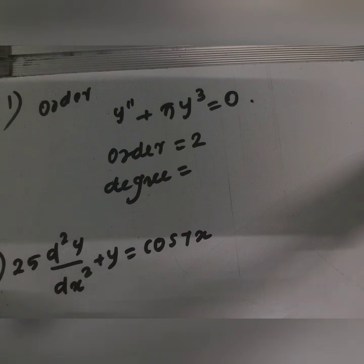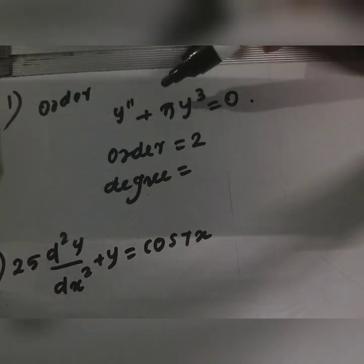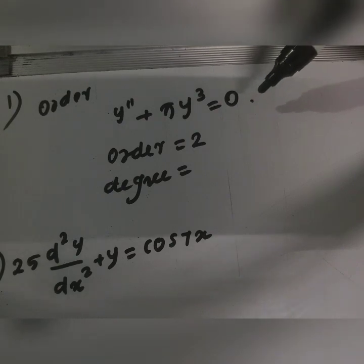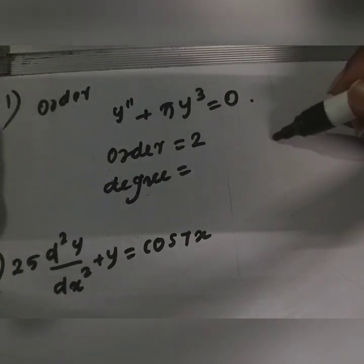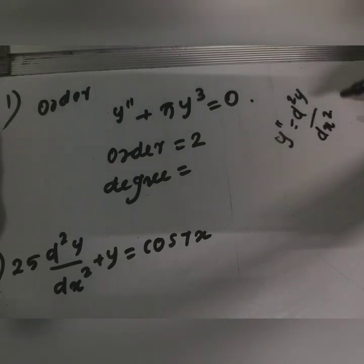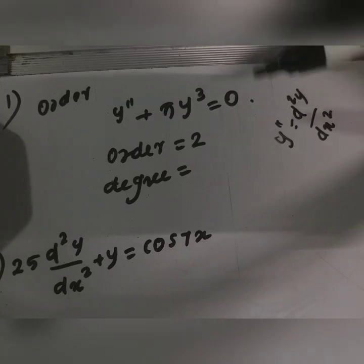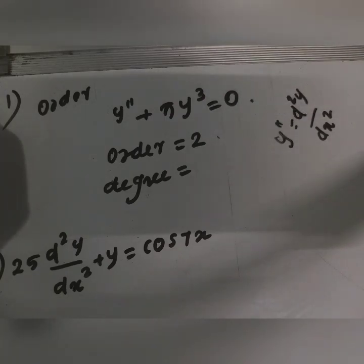I will try to get the first question — I will find the order of the equation. The equation is: y double dash plus pi y cubed equal to 0. The highest derivative is the second derivative, so the order is 2.